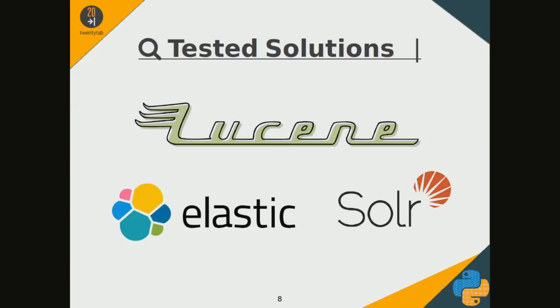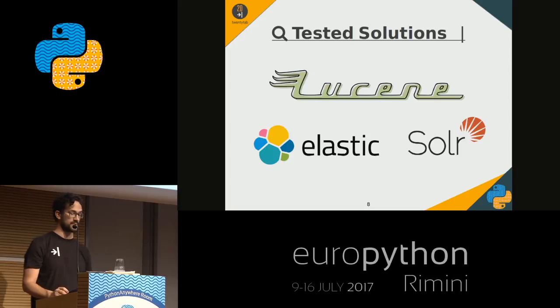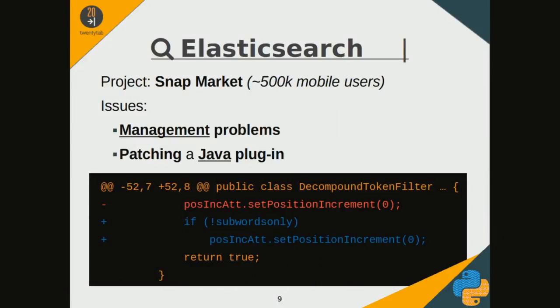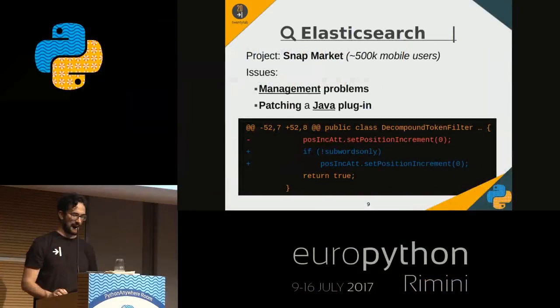Elasticsearch and Solr are two popular solutions for full-text search today. They are Lucene-based and written in Java. Snapmarket was a startup where I worked in the past that produced a mobile phone application for selling user items. In this project I used Elasticsearch, which had already been set up on the system, but we had some difficulty managing and synchronizing it. We had to apply some patches to a Java plugin we used for compound words in German, and I didn't particularly enjoy it.